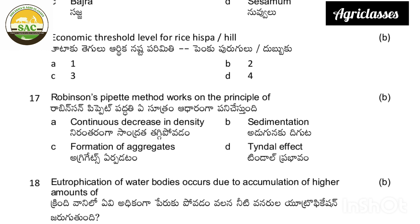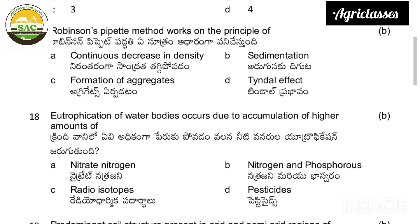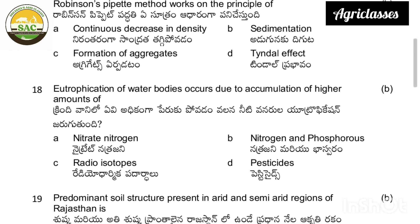Economic threshold level of rice hispa: options are 1, 2, 3, or 4. In nature the maximum is option B — two. Robinson's pet method works on the principle of: continuous decrease in density, sedimentation, formation of aggregates, or Tyndall effect.